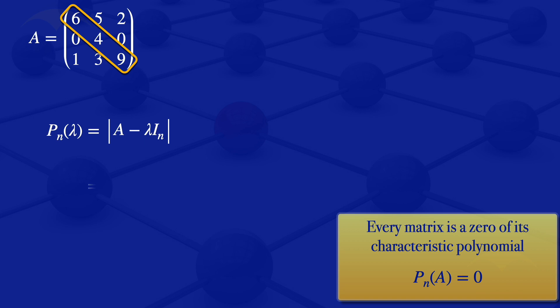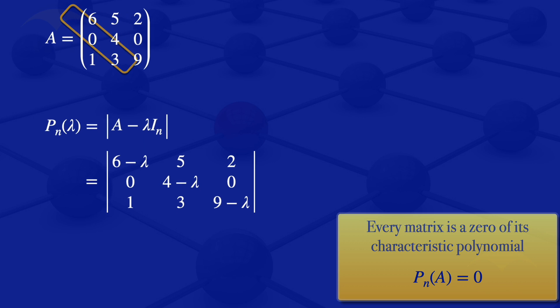So we would have the determinant of the matrix with entries: 6 minus lambda, 5, 2 in the first row; 0, 4 minus lambda, 0 in the second row; and 1, 3, 9 minus lambda in the third row.